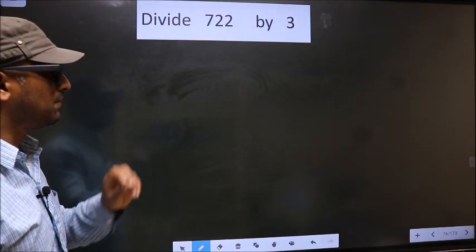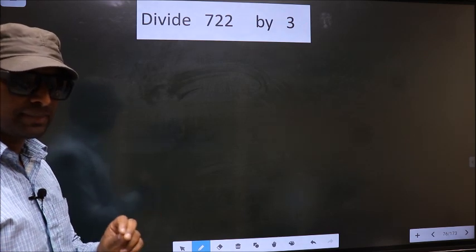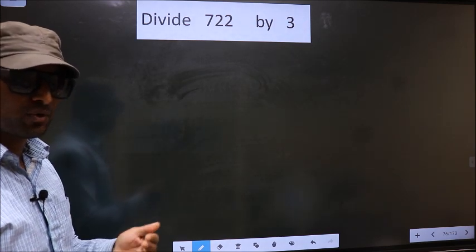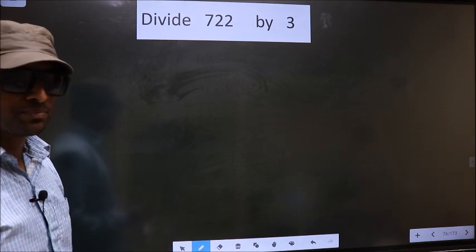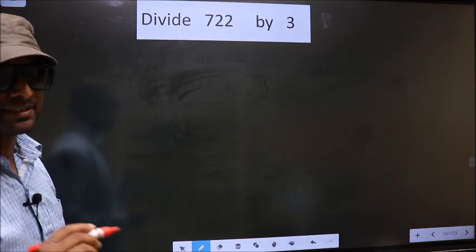Divide 722 by 3. While doing this division, many do this mistake. What is the mistake that they do? I will let you know. But before that, we should frame it in this way.